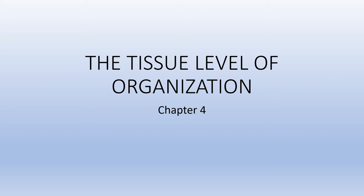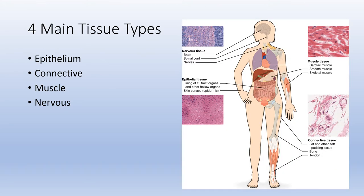Chapter four deals with the tissue level of organization. There are four main tissue types: epithelial tissue, connective tissue, muscle tissue, and nervous tissue. This diagram shows a representation of where you may find some of these different types of tissue and an example of what it looks like from a microscopic point of view.